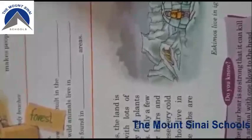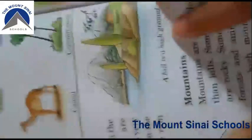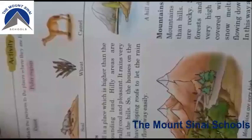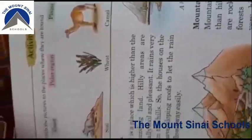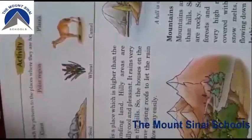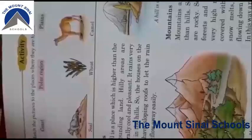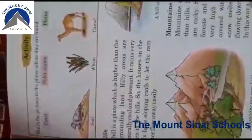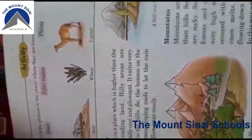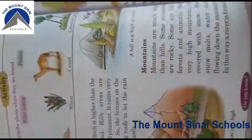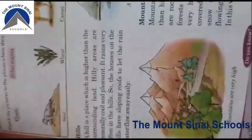There is an activity in your book — it is very interesting. Match the pictures to the places where they are found. Where are these animals or plants found? You have to match them with the given options. For example: seal — where is the seal found? You have to join it with the correct caption. Options include coast, polar region, plains, and desert. Items to match include wheat crop, camel, and coconut trees — all from your reading.